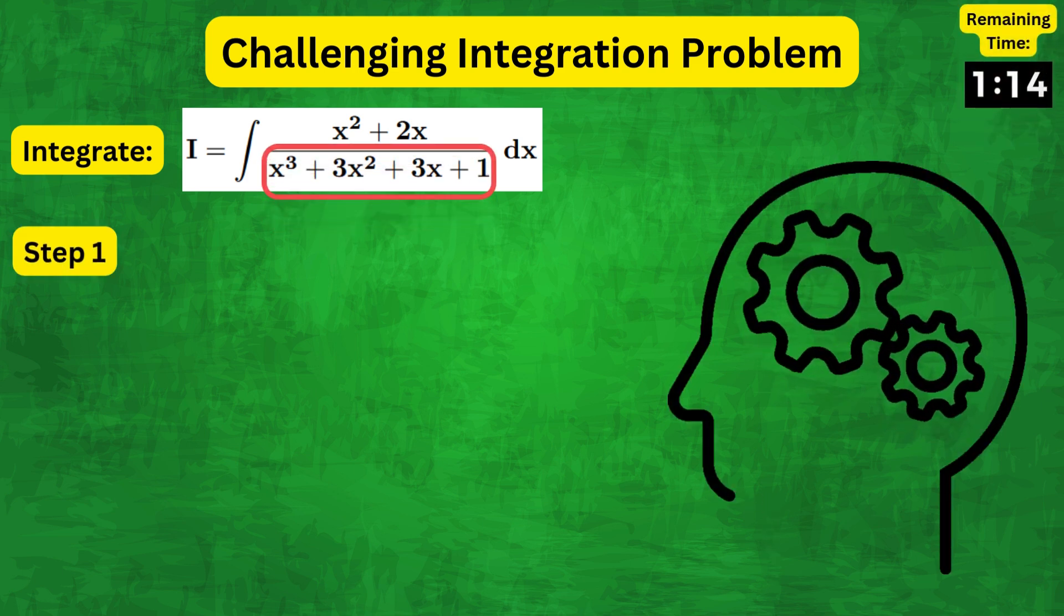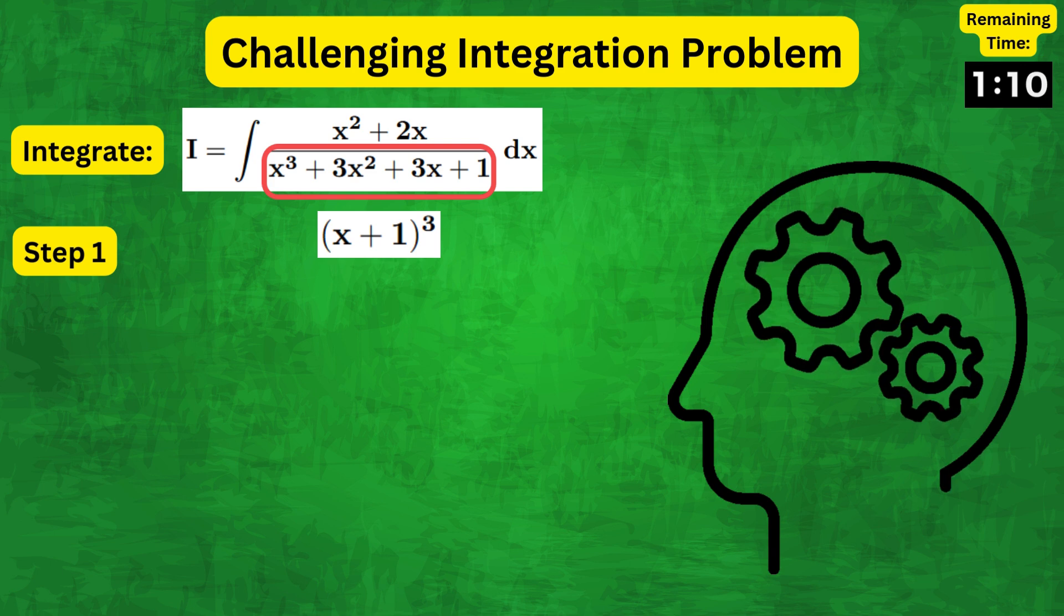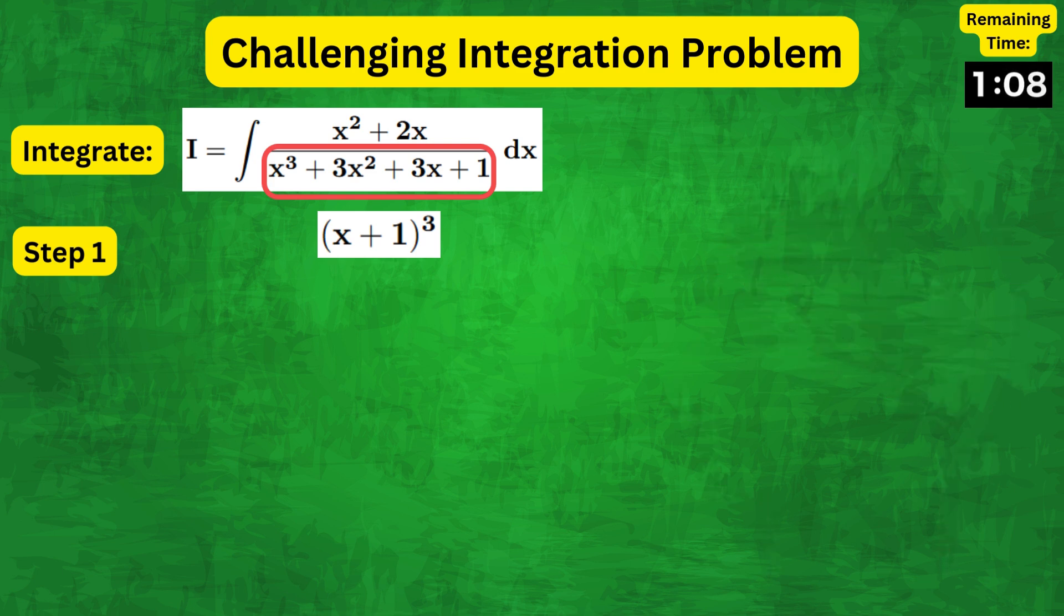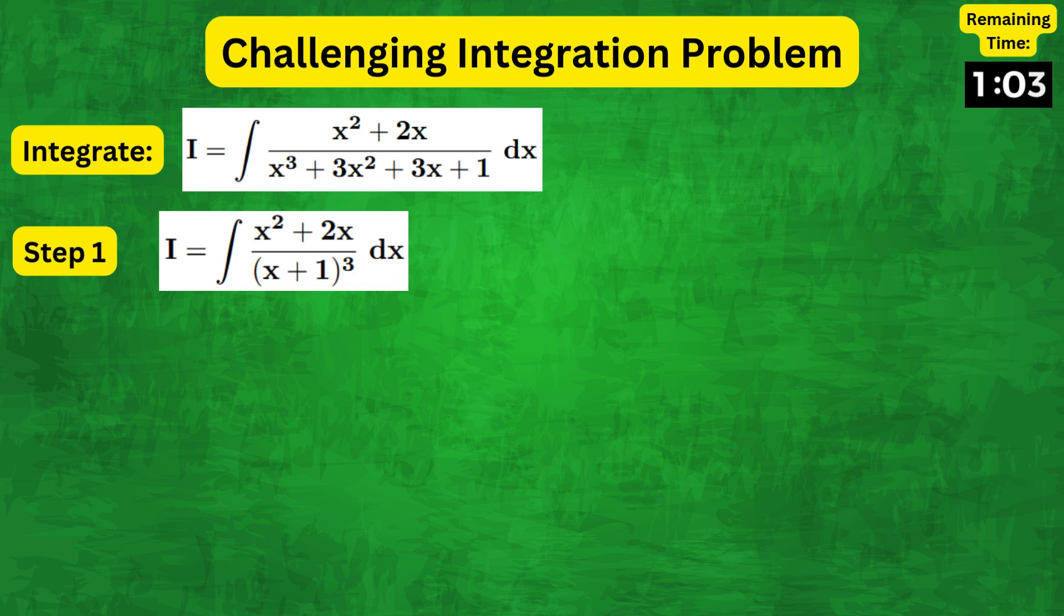This denominator looks quite messy, but notice that in fact it is a perfect cube. Therefore, the integral can be written as x squared plus 2x over x plus 1 whole cube.